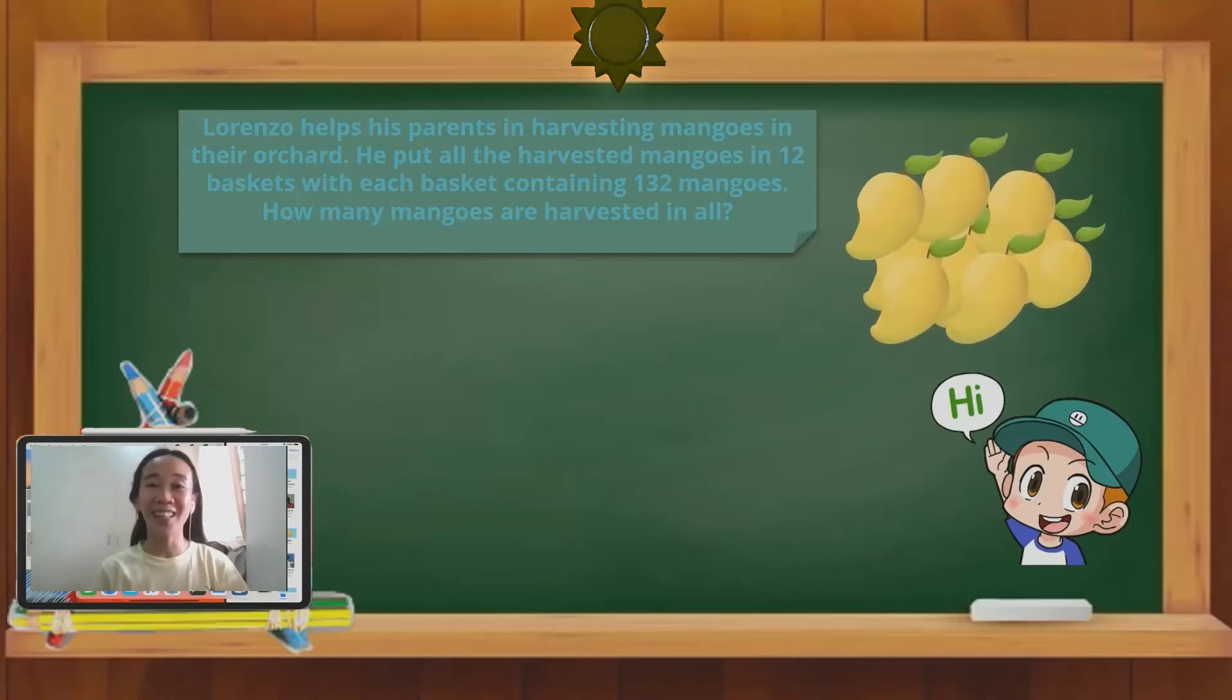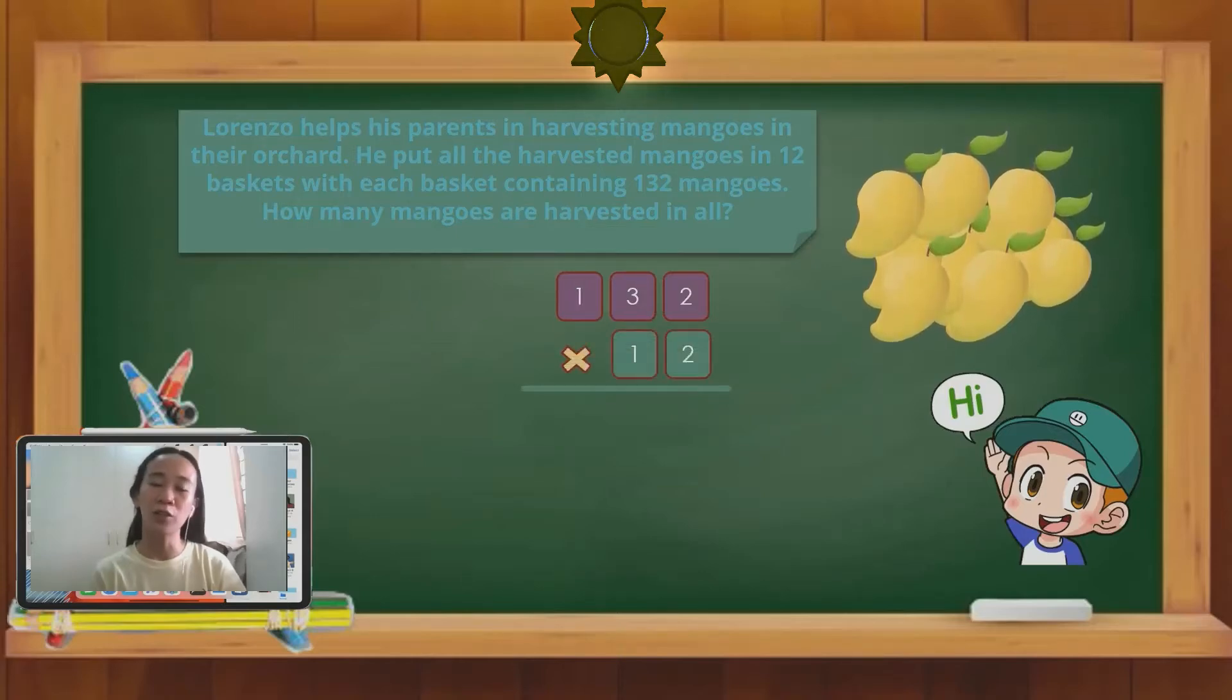You are on the right track, Gwadans! We are going to multiply 132 by 12 for us to be able to know the total number of mangoes harvested. So how to multiply 132 by 12?